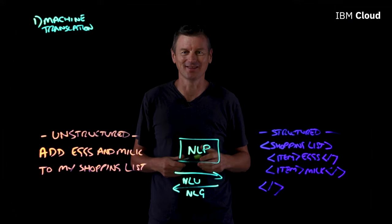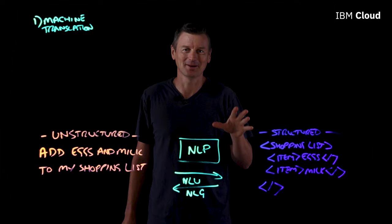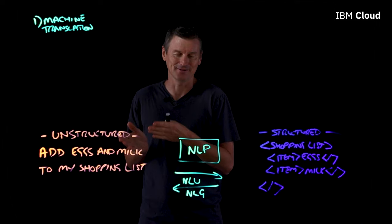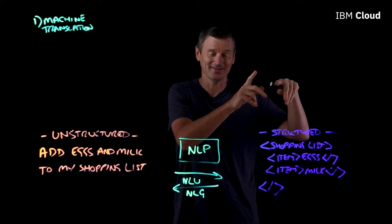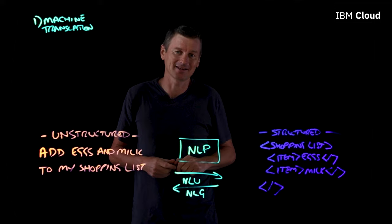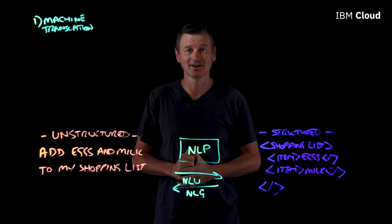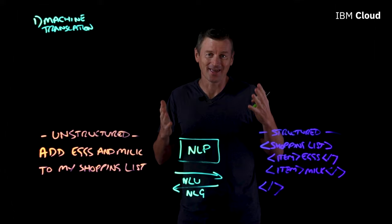My favorite example of this going horribly wrong: if you take the phrase "the spirit is willing, but the flesh is weak" and you translate that from English to Russian, and then translate that Russian translation back into English, you're going to get something like "the vodka is good, but the meat is rotten" — which is really not the intended context of that sentence whatsoever. So NLP can help with situations like that.